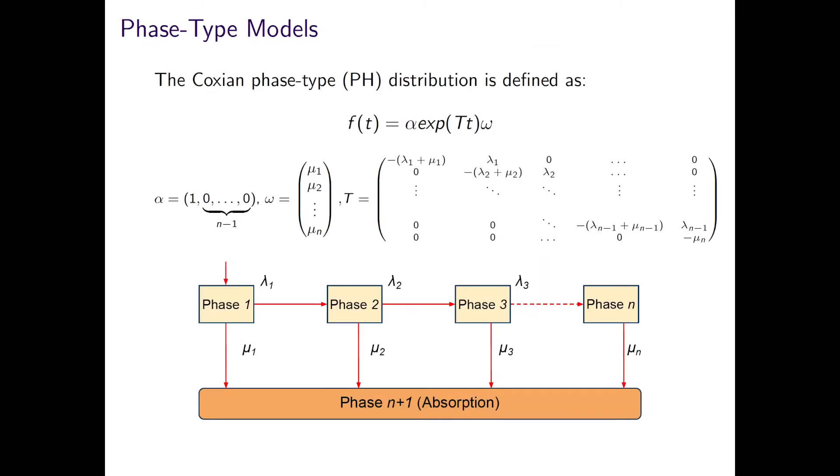Finally, I'd like to mention Coxian phase-type modelling, which neatly brings together the Markov-type structures we have explored and patient classification. A Coxian phase-type distribution has a structure shown here, which is essentially that all data is fed into the first phase of a Markov chain structure and then can pass through various phases or move to the absorbing state.